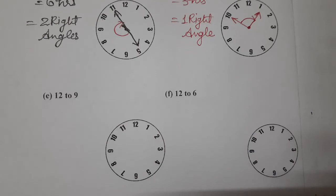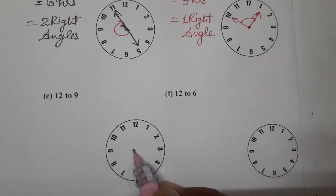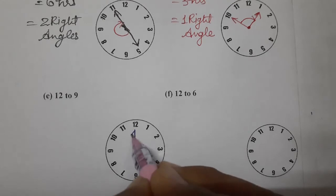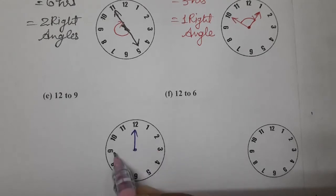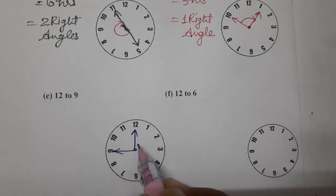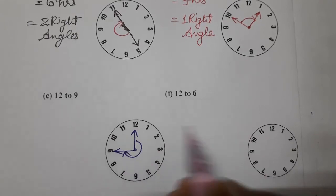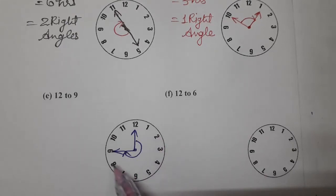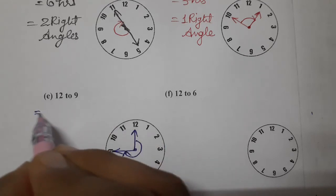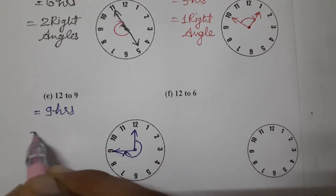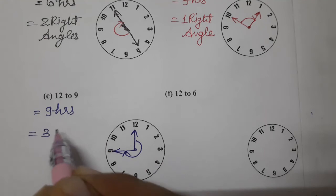Next, (e) 12 to 9. 12 is here and 9 is here. Clockwise you have to move, so we move in this way. So 1, 2, 3, 4, 5, 6, 7, 8, 9 — 9 R's, and 9 R's means we know 3 right angles.